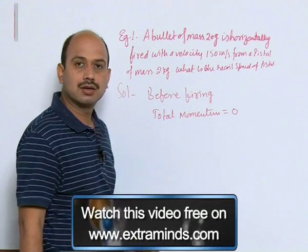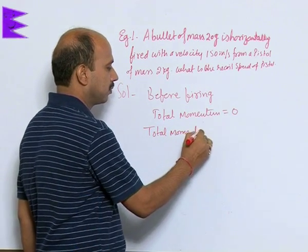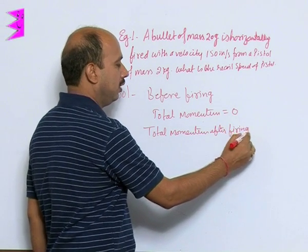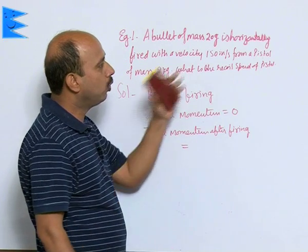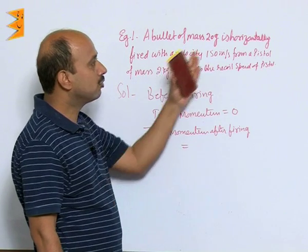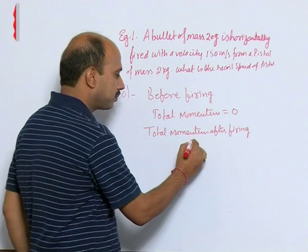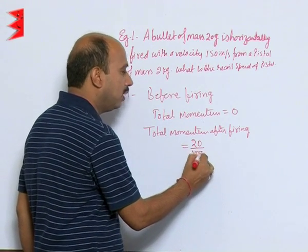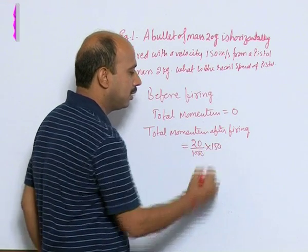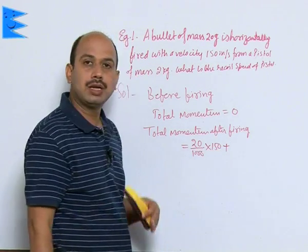What happens just after firing? Total momentum after firing equals momentum of the bullet plus momentum of the pistol. We know the mass and speed of the bullet, so we can find momentum of the bullet: 20/1000 (converting grams to kg) times 150 meters per second. This is the total momentum of bullet plus total momentum of pistol.